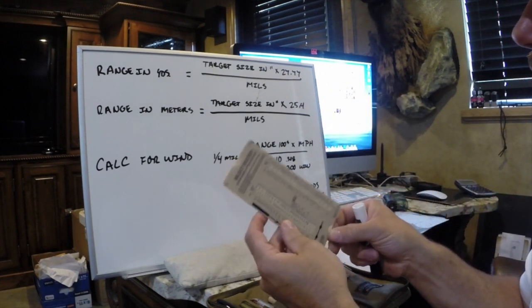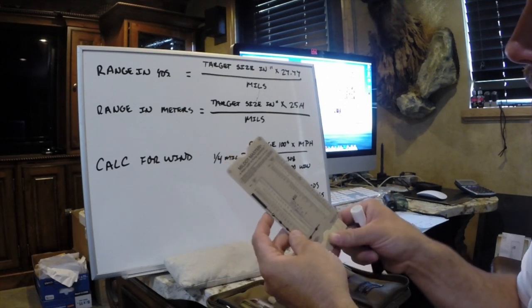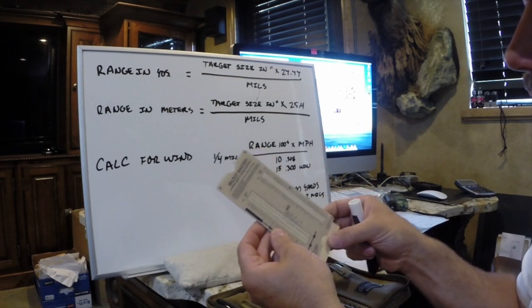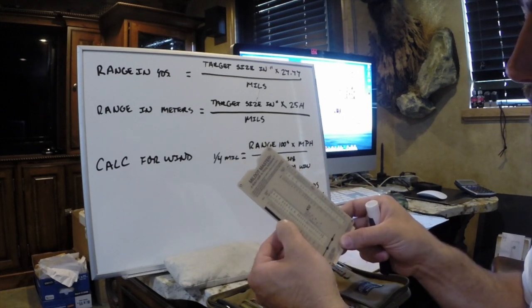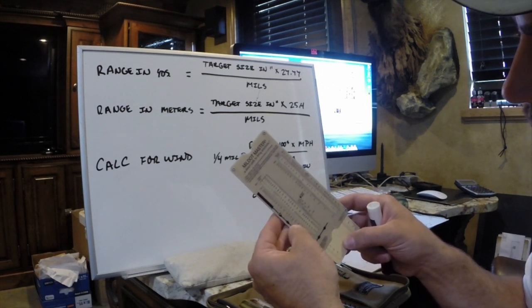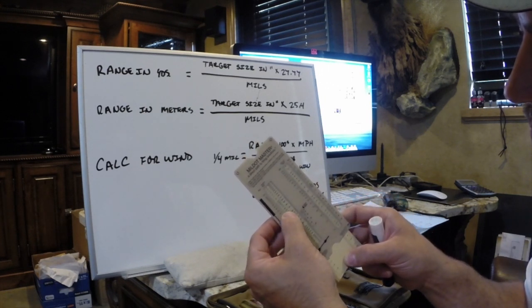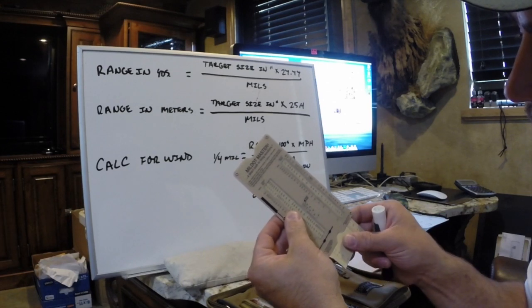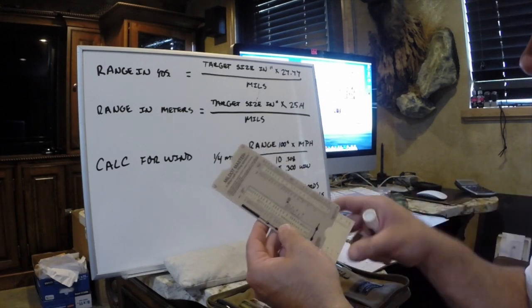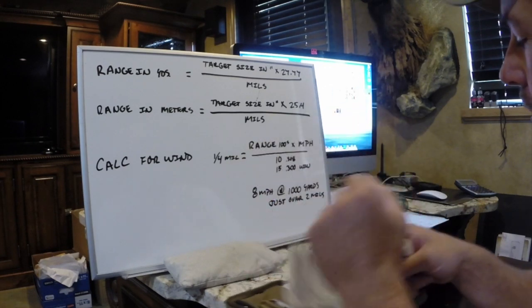There is also a cool little mil dot master that you can get. This is a handy thing to have with you. Basically it's doing the same thing, it's just on a slide rule. We've got our mils and we've got our target size. We dial those. We measure our target with how many mils. We know how big the target is, so we put that there and it spits out our target range. It's pretty handy and I don't get caught without this.